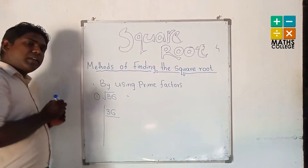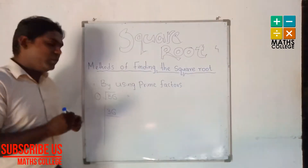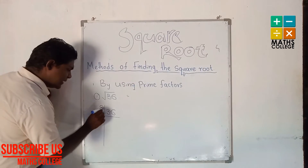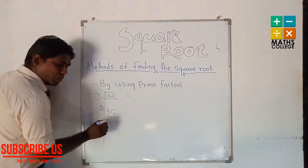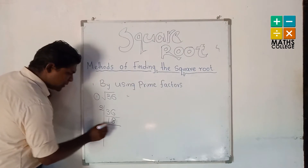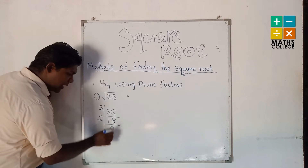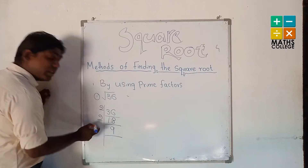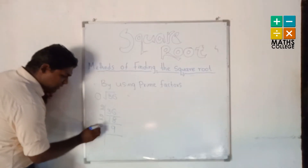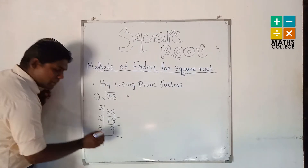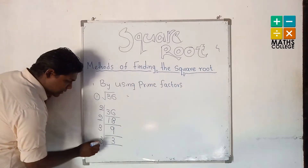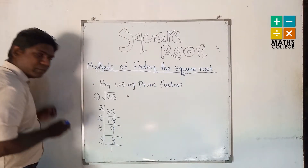Starting with the first prime number, you can divide 36 by 2 to get 18, then again by 2 to get 9. We cannot divide 9 by 2, so the next prime number is 3. Divide by 3 to get 3, then again by 3 to get 1.